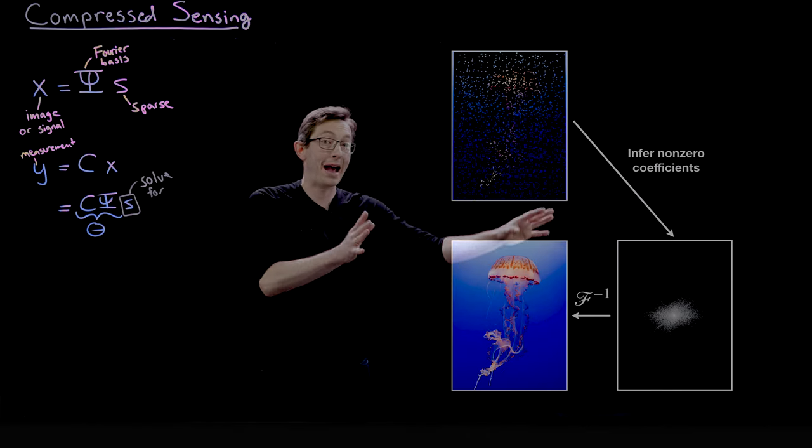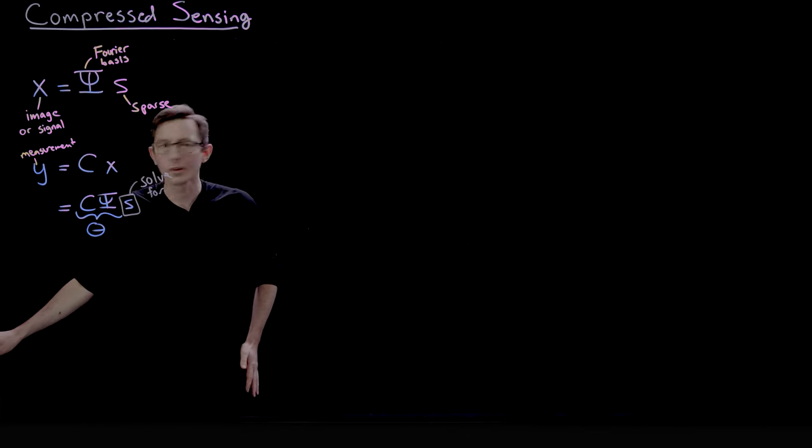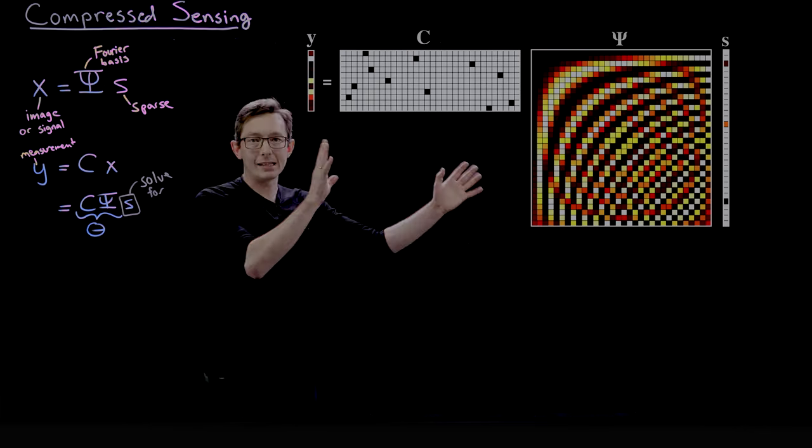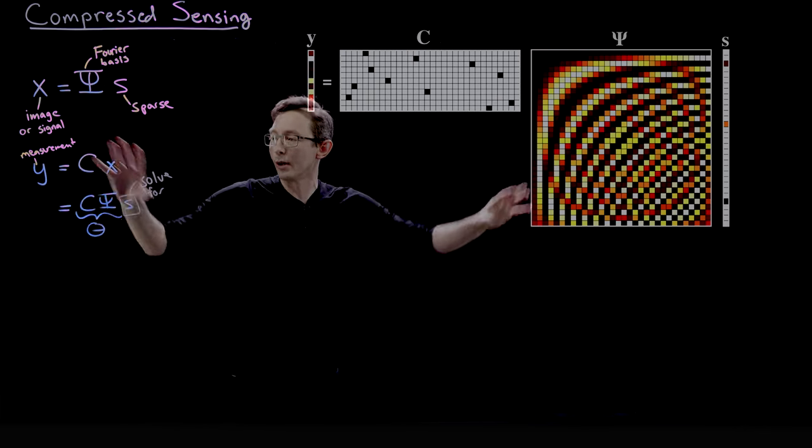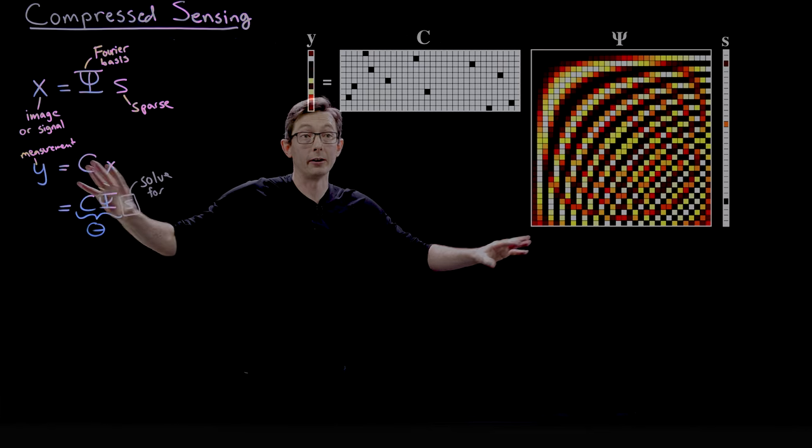Okay, so we're going to walk through now the math of how to do this. So this is kind of the matrix form, a pictorial form of this system of equations that I've written down here.